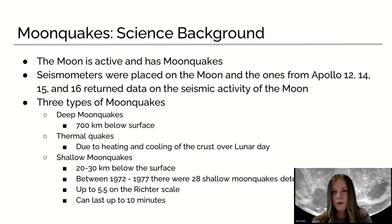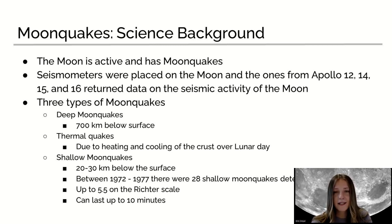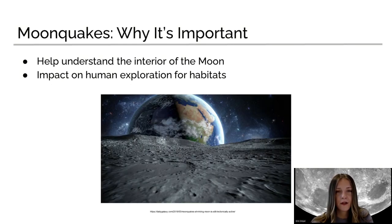Shallow moon quakes, which are one of the most important ones we'll look into, occur about 20 to 30 kilometers below the surface. Roughly between 1972 and 1977, there were about 28 shallow moon quakes detected, up to 5.5 on the Richter scale, and they can last up to 10 minutes or be as short as 20 seconds. This is important because we want to understand the interior of the moon, and this can also impact human exploration for habitats.